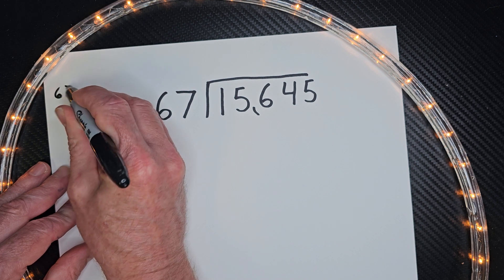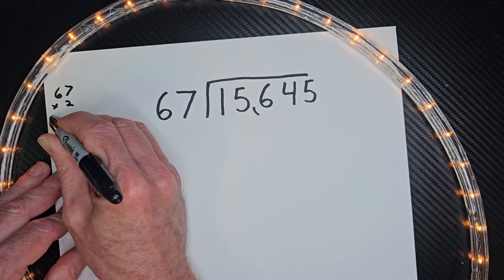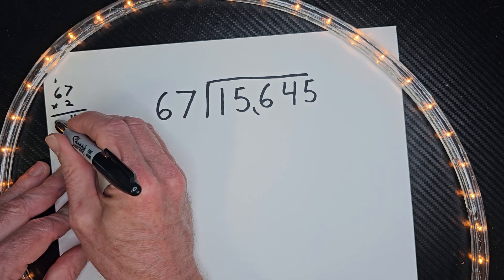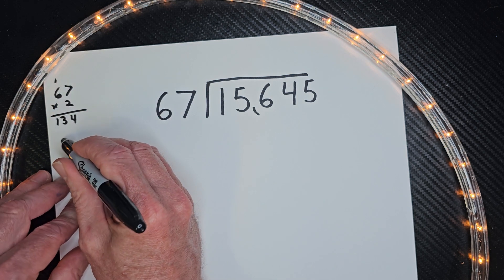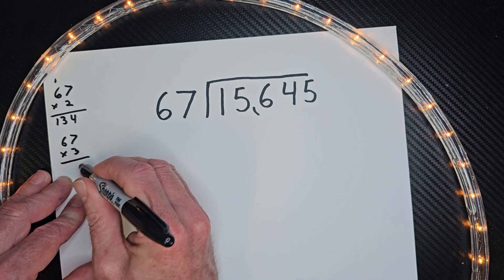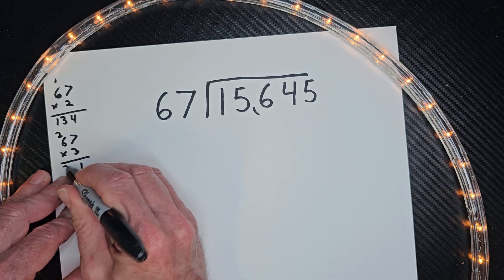I'm going to do 67 times 2. So 7 times 2 is 14. Carry the 1. 6 times 2 is 12, and then 13. Let's do 67 times 3. So 7 times 3 is 21. Carry the 2. 18, 19, 20.